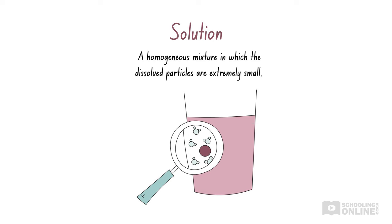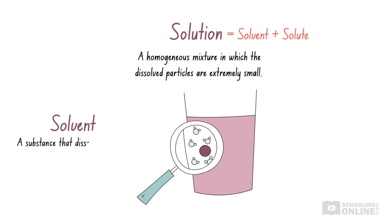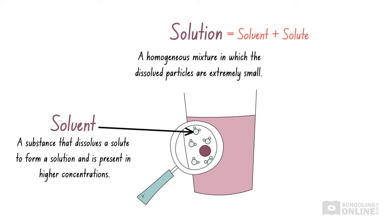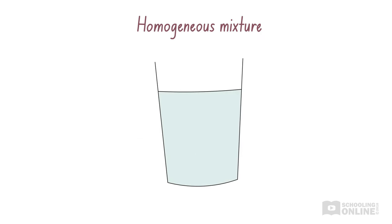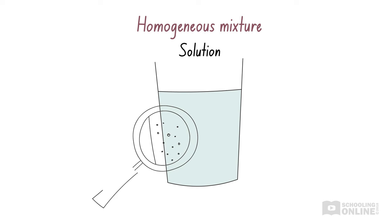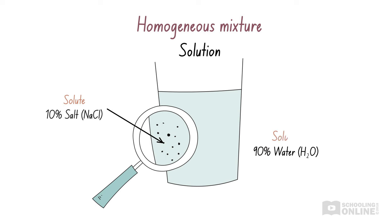Solutions may exist in the form of liquids or solids. Solutions are made of one solvent and at least one solute. A solvent is a substance that dissolves a solute to form a solution and is present in higher concentrations. A solute is a substance that dissolves in a solvent to form a solution and is present in lower concentrations. For example, seawater is a common solution of salt and water. Salt is the solute because it dissolves in water and is present at lower concentrations, while water is the solvent because it dissolves the salt and is present in higher concentrations.